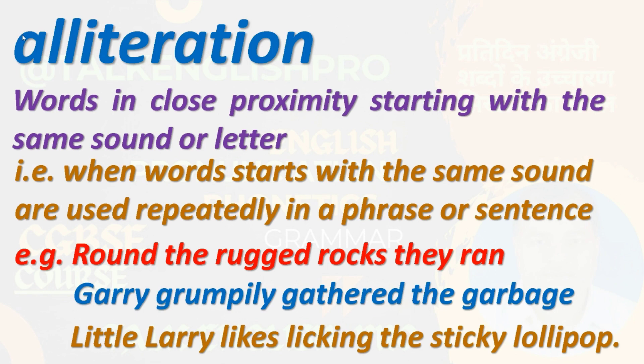Alliteration is when words that start with the same sound are used repeatedly in a phrase or sentence. In Hindi: किसी phrase या sentence में एक ही वर्ण से या एक ही उच्चारण से जो ढेर सारे शब्द बार-बार आये, वो alliteration कहलाते हैं।